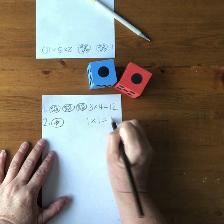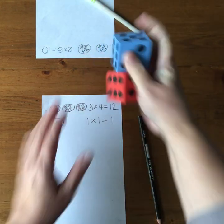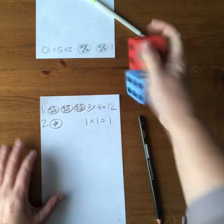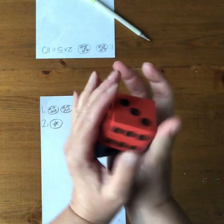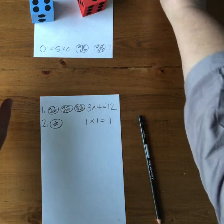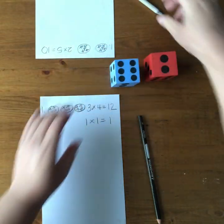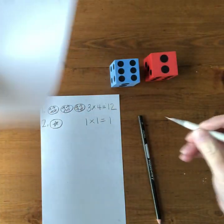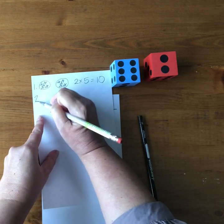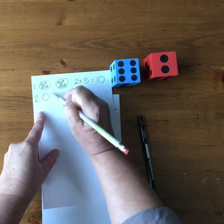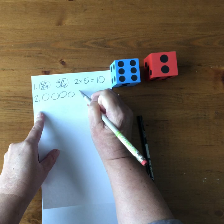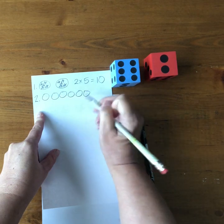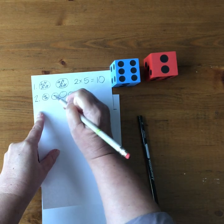And then my partner does the same so they roll oh my goodness same thing I'm gonna have to maybe roll a little bit better oh so they've got six and two I'm just gonna turn this around here so they've got six groups one two three four five six and then two stars in each group.